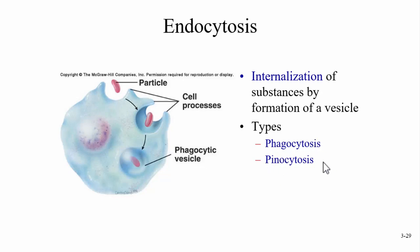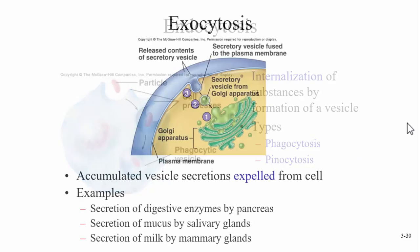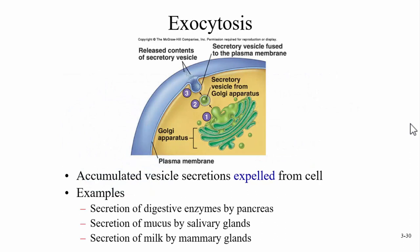Phagocytosis is cell eating; pinocytosis is cell drinking. After all that cell eating and drinking, you've got to expel things from the cell — that is exocytosis. Exo means outside of; exocytosis is a condition of expelling something outside the cell. That could be waste products or something the cell makes, like a digestive enzyme, saliva from a salivary gland, or milk from a mammary gland — it expels that product through exocytosis.